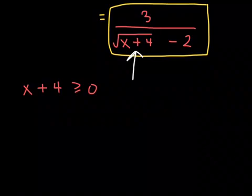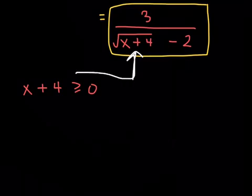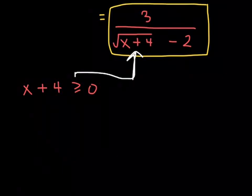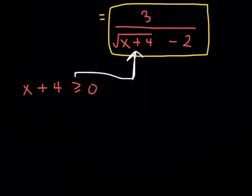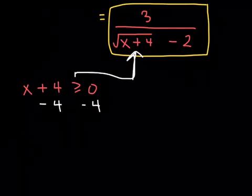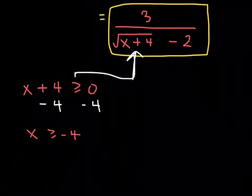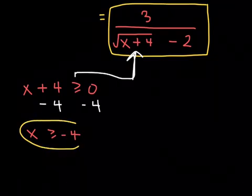In order to avoid imaginary solutions, x plus 4, which is the radicand, the expression underneath the radical, must be greater than or equal to 0. When you subtract 4 from both sides here, you get that x must be greater than or equal to negative 4. I want you to put that aside for the time being.